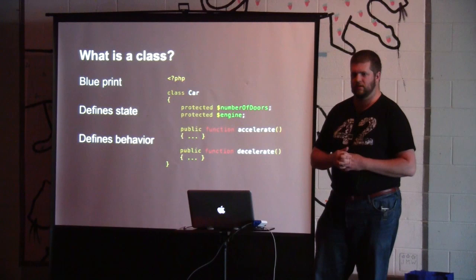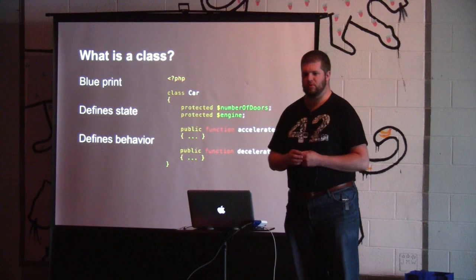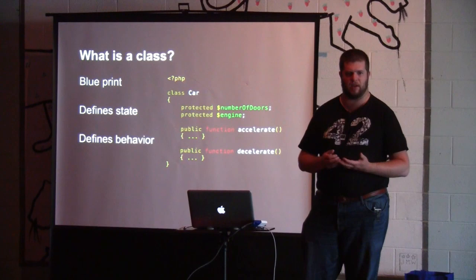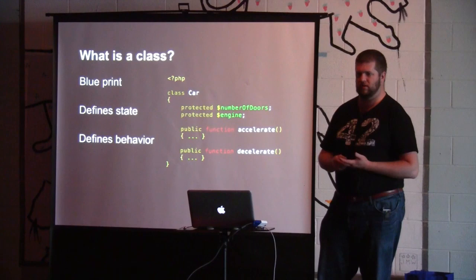The first concept is a class. A class is generally a blueprint — it defines how the objects that you're going to build based on this blueprint are going to look. You're going to define the things that you're going to store as far as state, the information about whatever it is you want to represent. In this case, I've got my car class and I've got a couple of different properties: the number of doors it has and an engine.